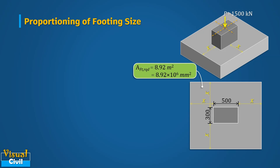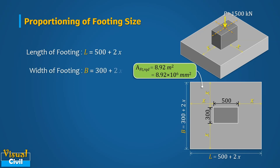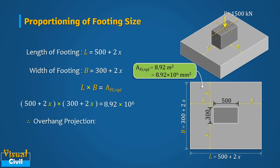The length of footing L is equal to 500 plus 2 times x, and the width of footing B is equal to 300 plus 2 times x. Equating the area of footing with the minimum area required and solving the equation, we get the overhang projection x equal to 1292 mm.